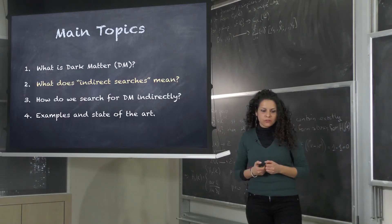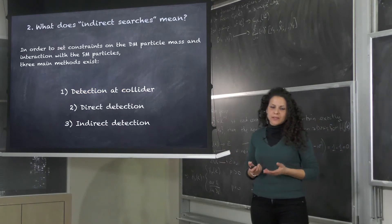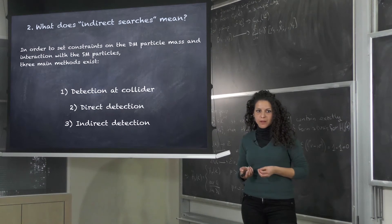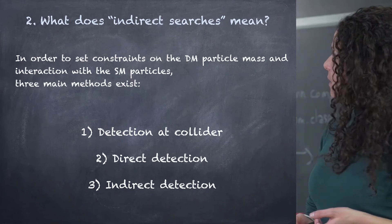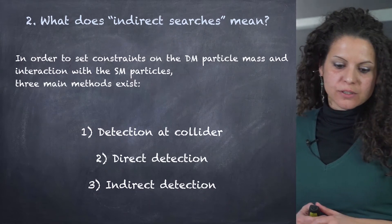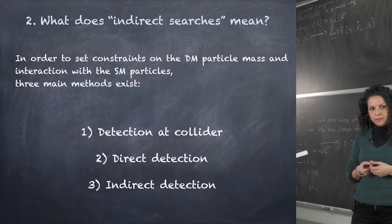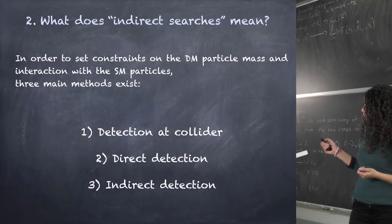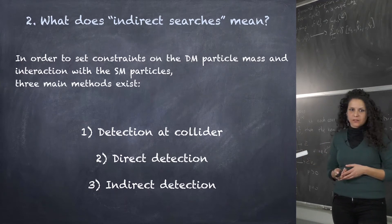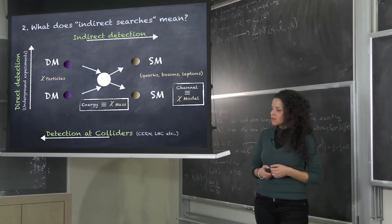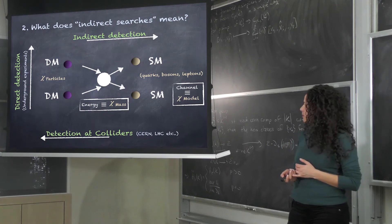Moving to the second question: what does indirect searches mean? In order to constrain the nature of dark matter as a particle, we want to determine its mass and the way in which it interacts with standard model particles. There are three main ways to detect this dark matter particle: detection at a collider, direct detection, and indirect detection. This scheme makes it easy to understand all three ways.